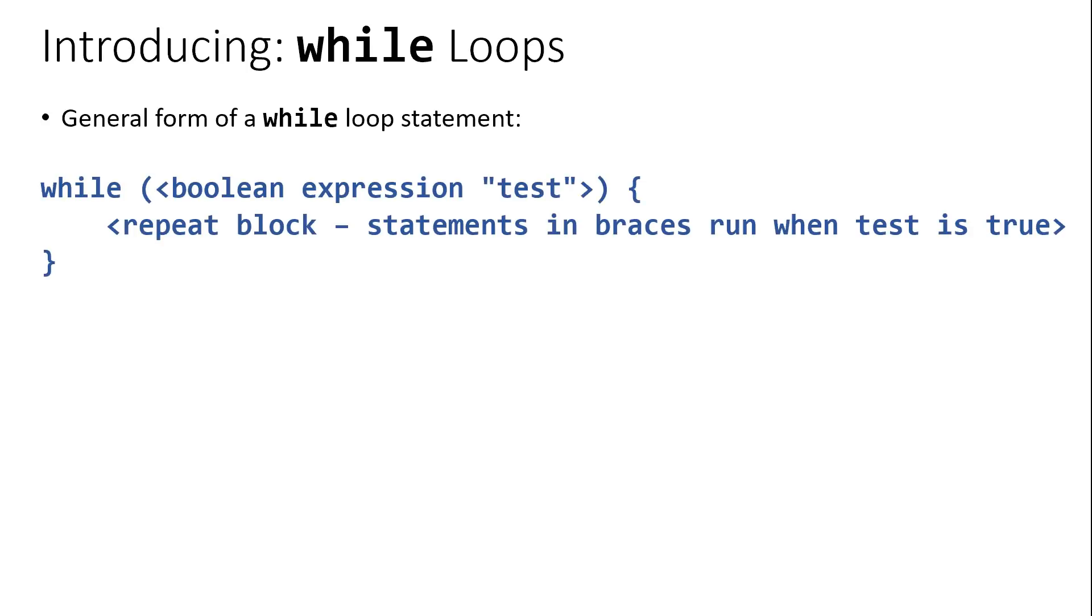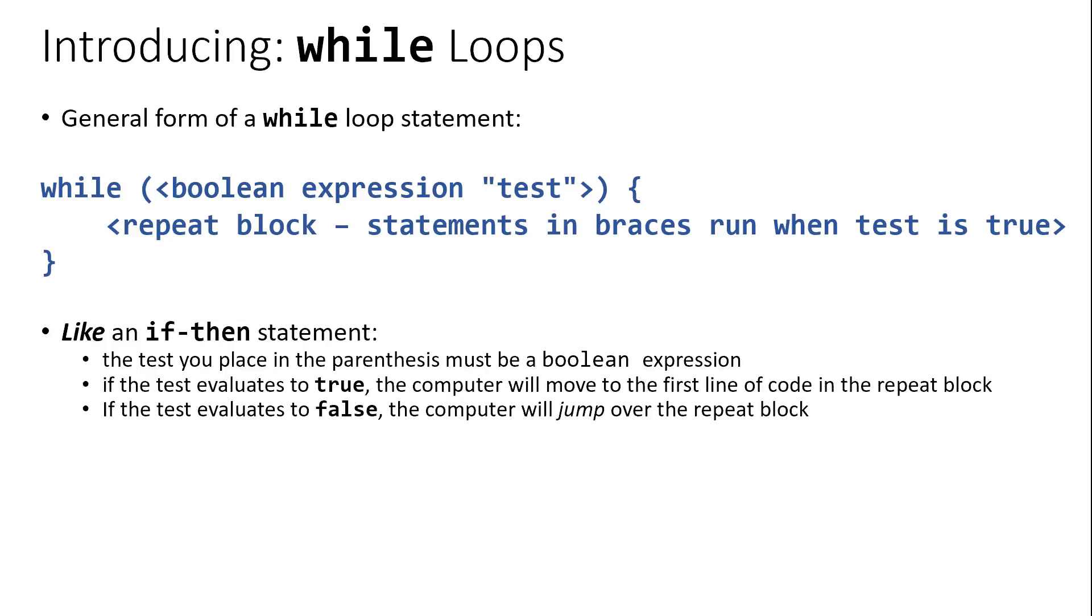The syntax for a while loop looks a lot like an if-then statement, but rather than if, we use the keyword while, followed by parentheses. Inside those parentheses we need a Boolean expression that's a test, a condition, that if true, then we will enter what's called the repeat block, and statements inside the braces will run when that condition is true. If that condition is false, just like an if-then statement, we'll jump over the repeat block and continue on in our code.